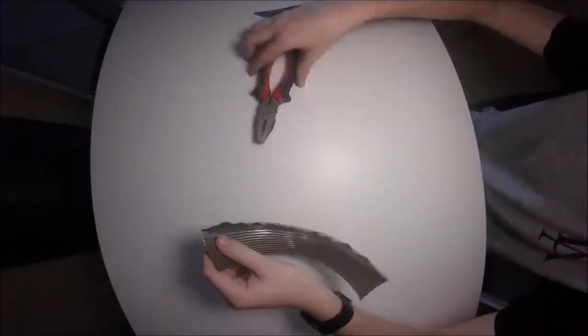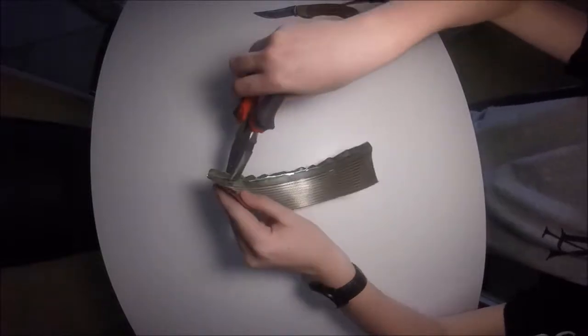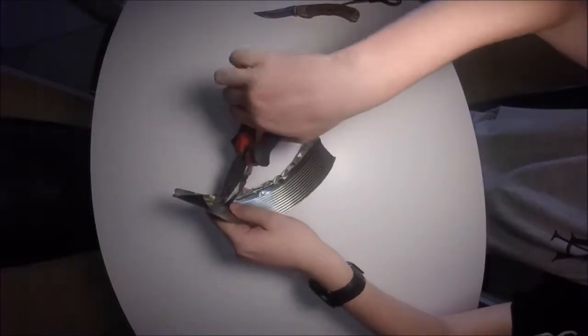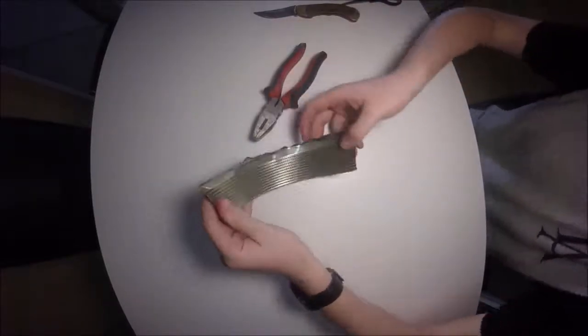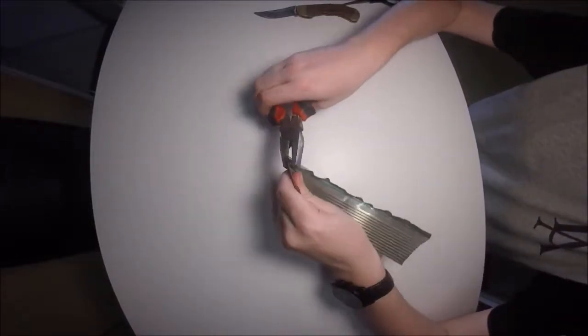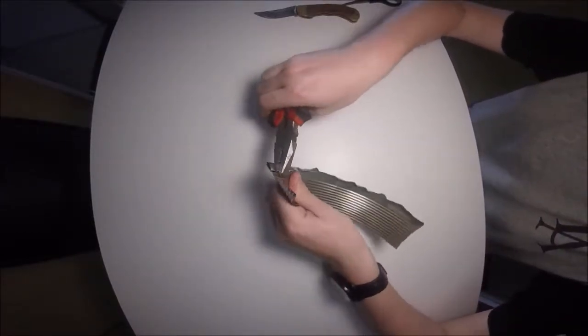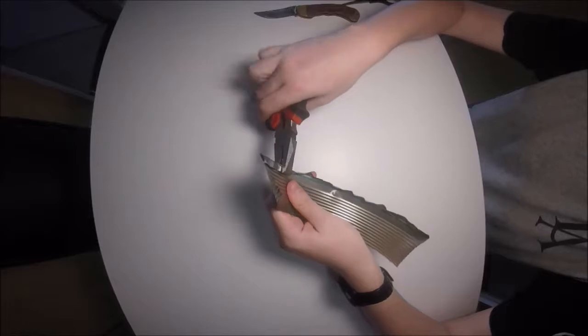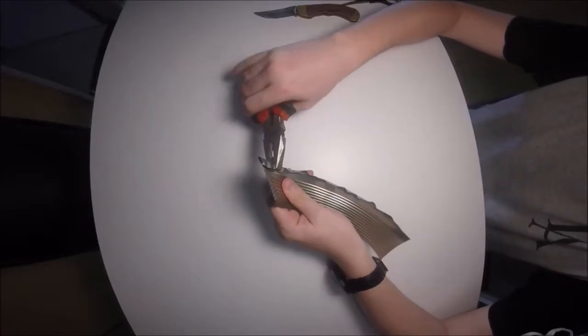Now you'll notice I start using the pliers to bend it over a bit further. A little bit later you'll see I start using my fingers, because you need to have the can bent over enough so that it's easy to do this step. We are crimping it over completely.